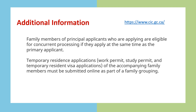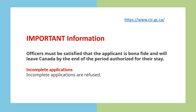Family members of the principal applicant are eligible to apply for concurrent processing if they apply at the same time as the primary applicant. For more information, see the definition of a family member in subsection R13 — temporary residence applications, work permit, study permit, and temporary resident visa applications of accompanying family members must be submitted online as part of the family grouping. Officers may also request additional documents at any time to make a decision. Incomplete applications are refused.